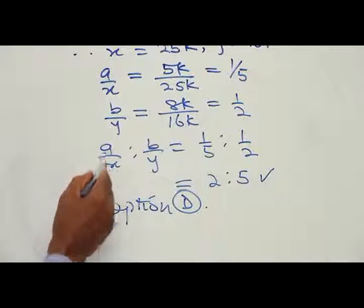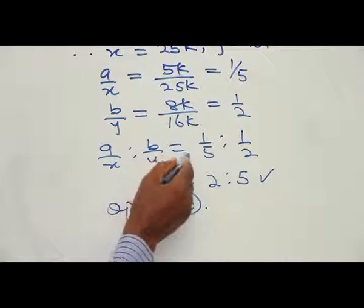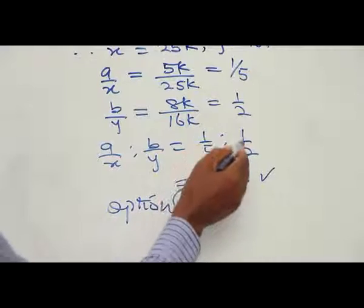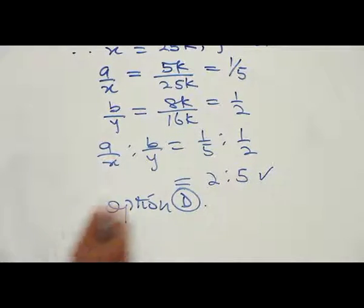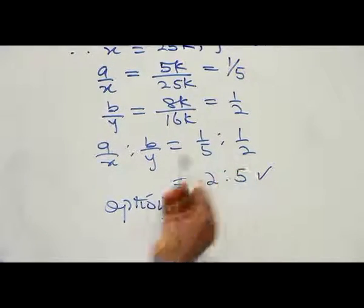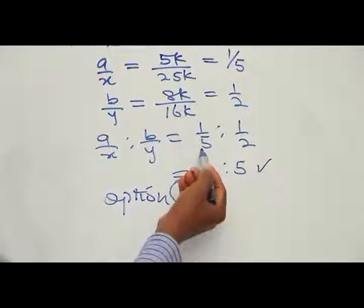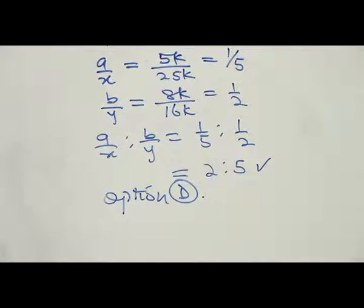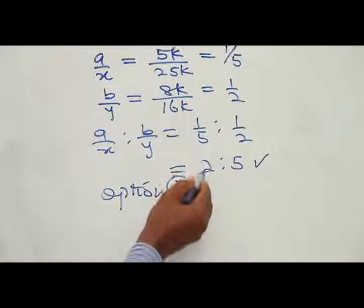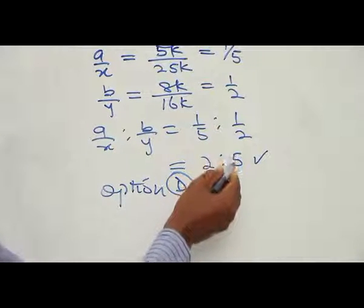Now, ratio a/x to ratio b/y equals 1/5 ratio 1/2. Of course, in ratio we can clear the fractions by multiplying by the LCM of 5 and 2 which is 10. So 10 times 1/5 will give you 2 and 10 times 1/2 will give you 5.